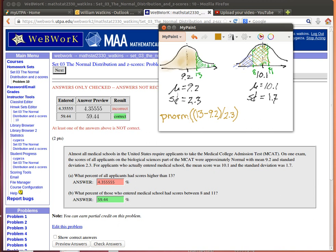The mean of the population of all applicants was 9.2 with a standard deviation of 2.3, and we wanted to find the percentage of them that got a score of more than 13.